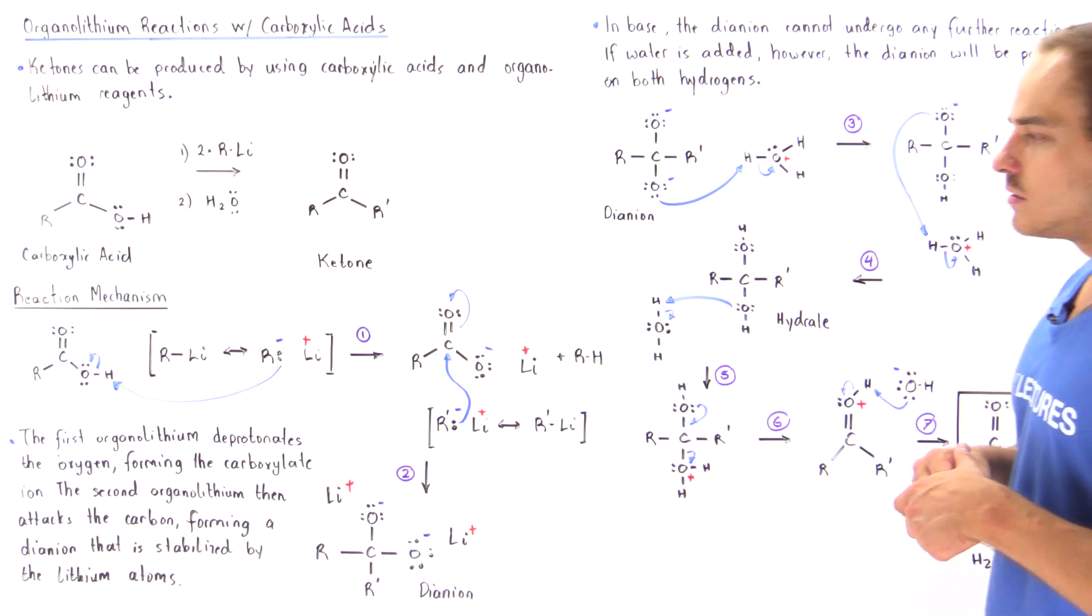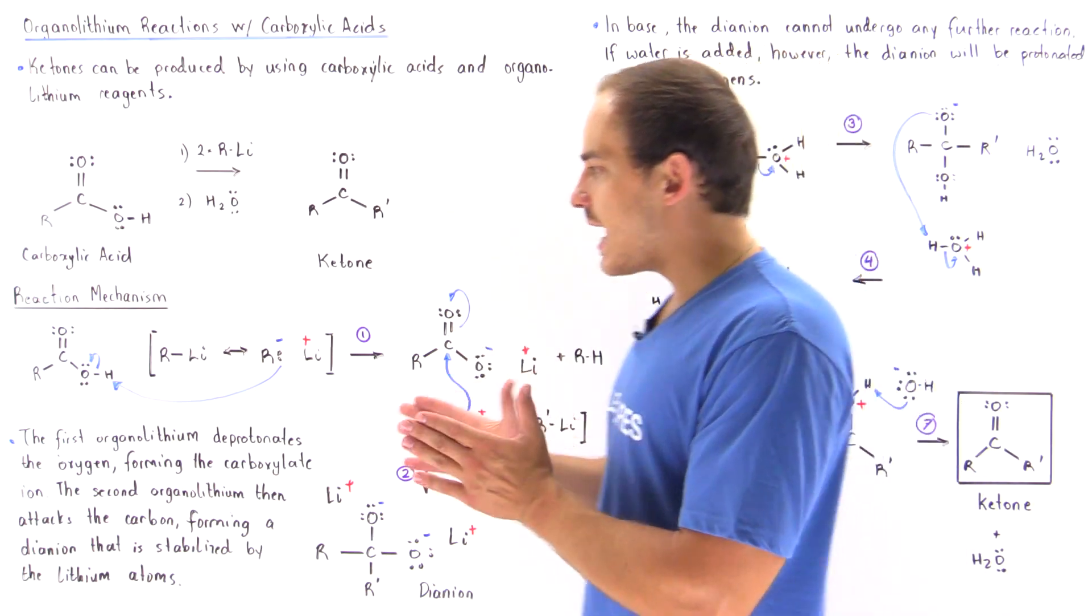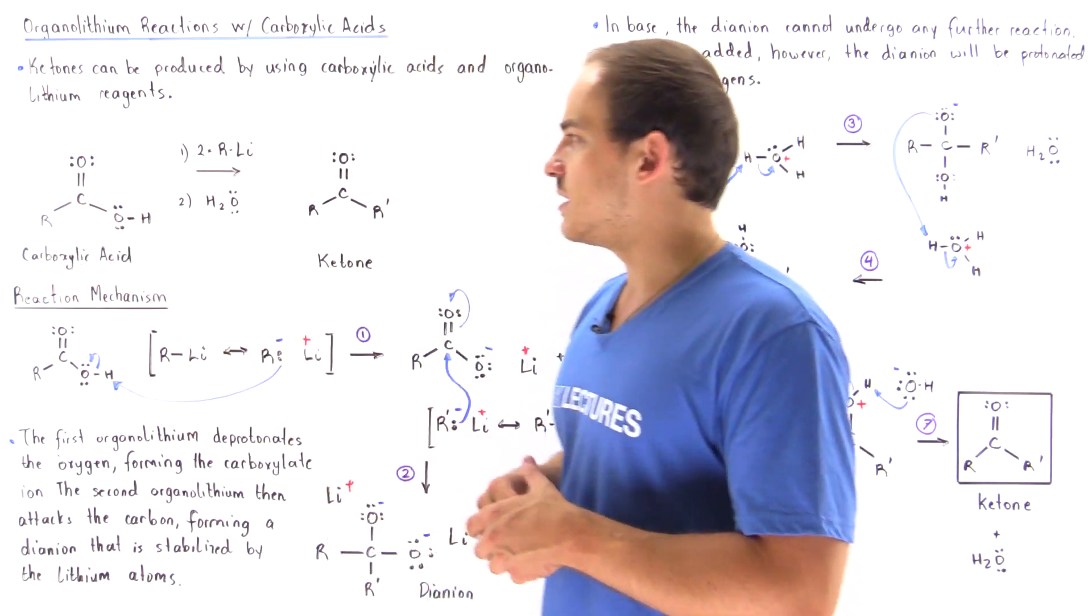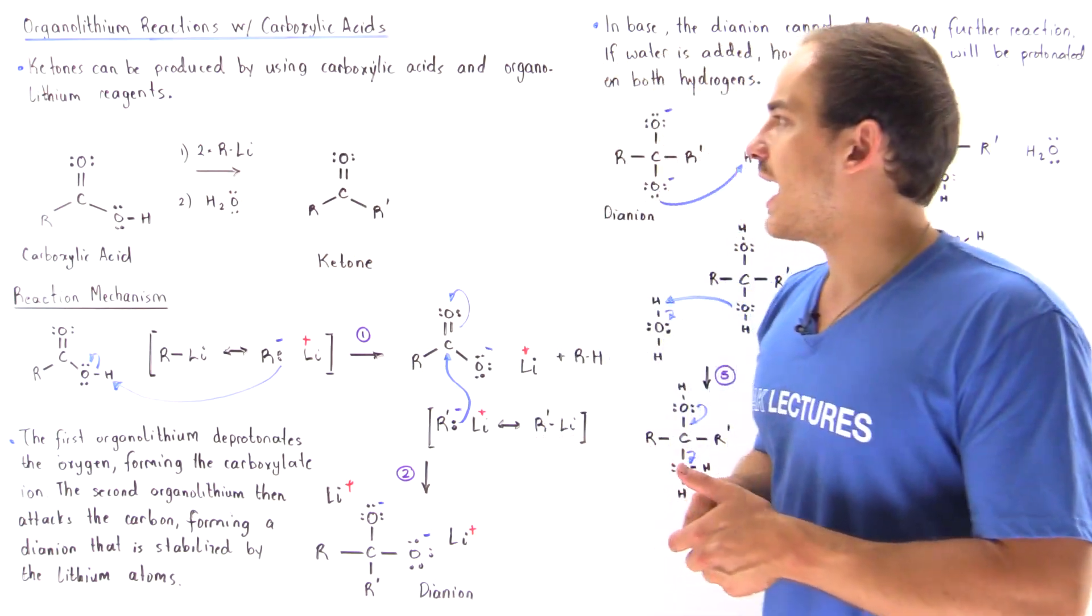Let's take a look at the reaction mechanism. In the first step, we take the carboxylic acid and mix it with one of these two organolithium reagents.